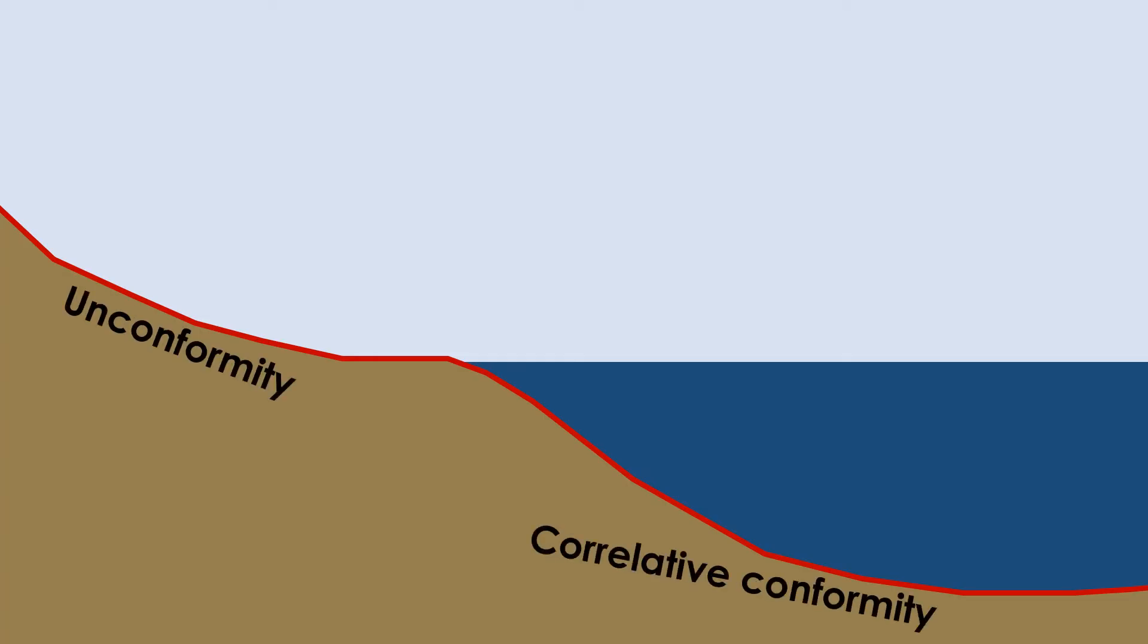In any case, the unconformity can be correlated to a correlative conformity located in deep water. The correlative conformity can sometimes be recognized by a submarine fan composed of turbidites of sediment derived from detritus from the hinterland and erosion of the sediment on the shelf along the erosional surface. In any case, the unconformity and correlative conformity together represent the sequence boundary.